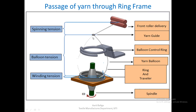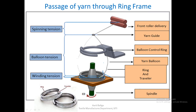The tensions in the entire region are divided into three main parts: spinning tension, between the front roller and the yarn guide; balloon tension, between the yarn guide and the point where yarn enters the traveler; and winding tension, from the traveler and ring position to the cop. This is a close-up of how the ring and traveler look.